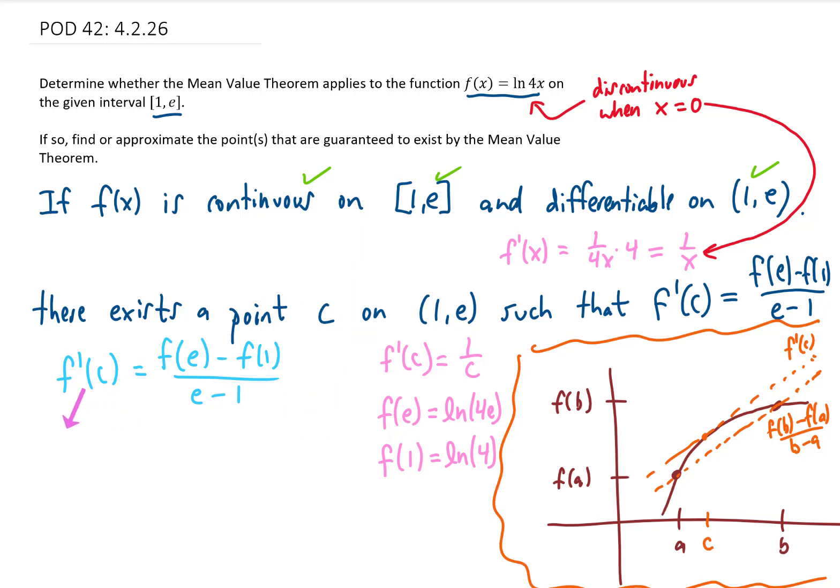Let's plug all of this into the formula given to us by the mean value theorem. We get 1 over c equals the natural log of 4e minus the natural log of 4 all over e minus 1.